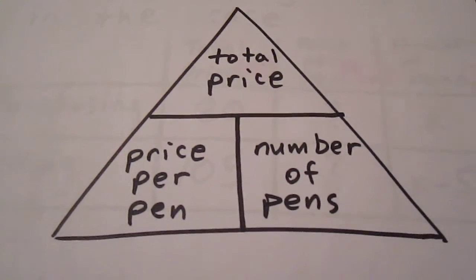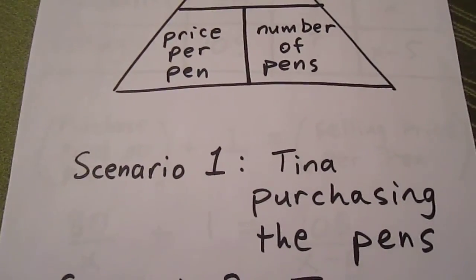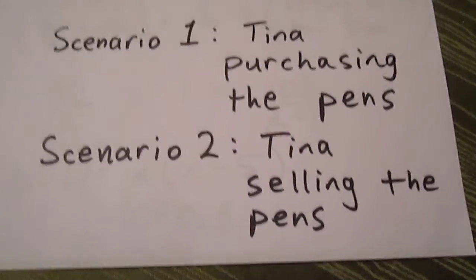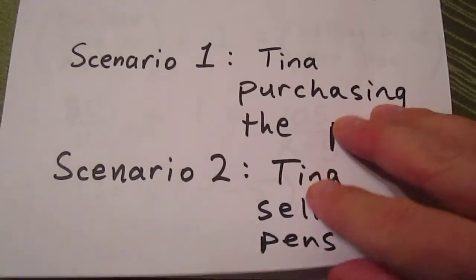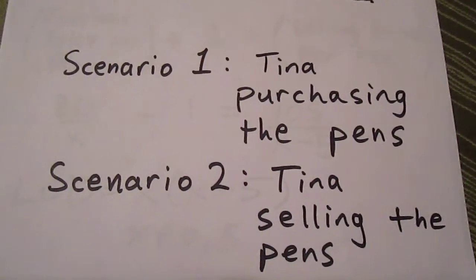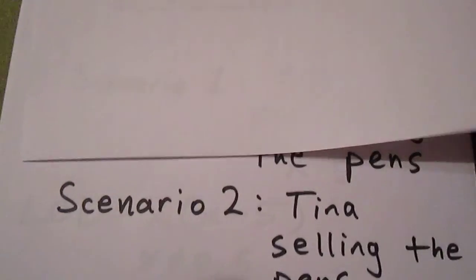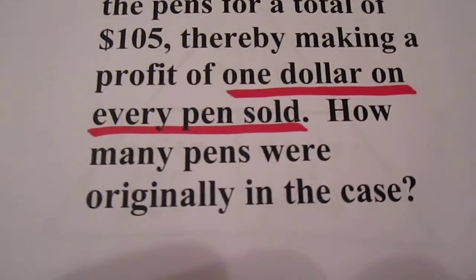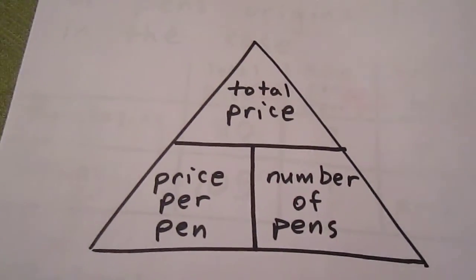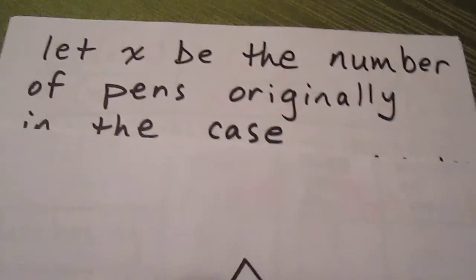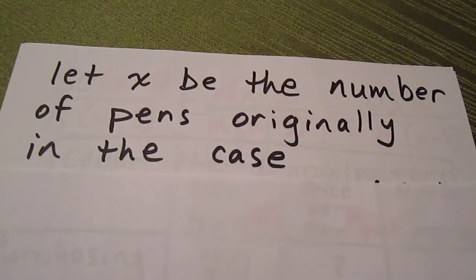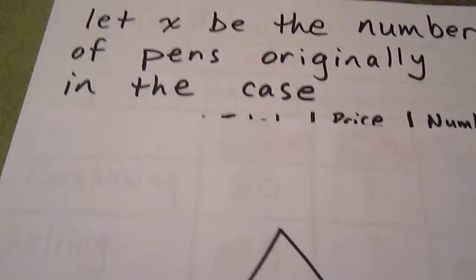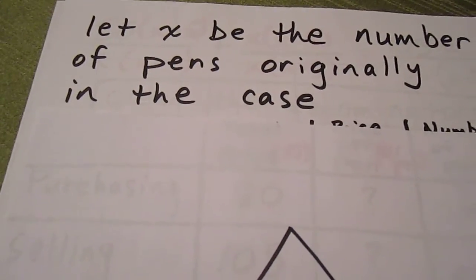Another thing we need to do here is to determine what our two scenarios are. One of our scenarios is when Tina purchases the pens, and one is when Tina sells the pens. We go back to the question and ask ourselves, ultimately, what is this asking us about? It's asking how many pens were originally in the case. So we're going to let X be the number of pens that were originally in the case.